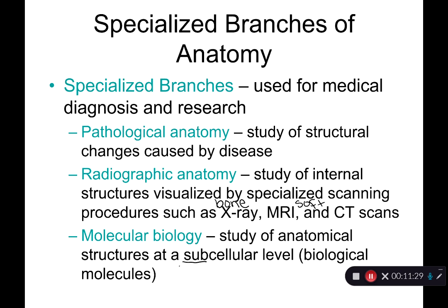The last special type is molecular biology, which looks at anatomical structures at a sub-cellular level. A cell is the smallest unit of life, the smallest living structure in the body. 'Sub-' means below or under — think 'submarine' — so molecular biology looks at things smaller than a cell: the macromolecules that make up cells, such as phospholipids, carbohydrates, proteins, DNA, and RNA. It focuses on the components of the cell rather than the whole cell.